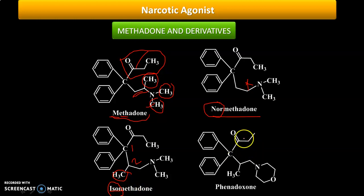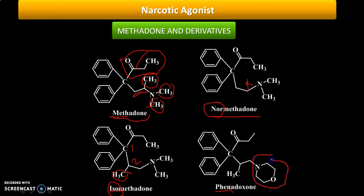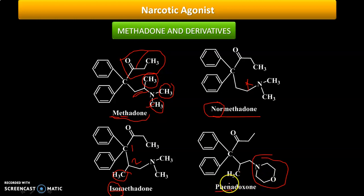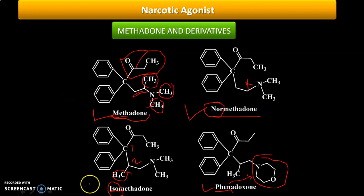The last compound is phenoxadone. The name 'phenoxa' hints at a morpholine linkage present in the side chain. While there may not be a perfect direct relationship between 'morpholine' and 'phenoxa,' this prefix gives you a hint that a morpholine ring is in the side chain. So in this way, remember the four structures: methadone, normethadone, isomethadone, and phenoxadone.